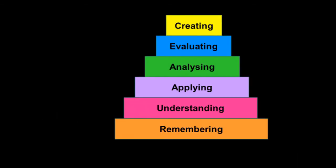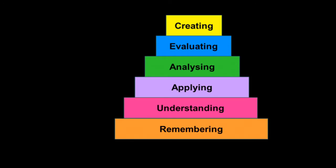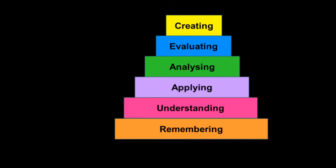Bloom's main theory was that there is an order to how we learn. We start with this foundational aspect of remembering, and then we start to be able to understand — we take those facts that we remember and can start to add complexity to them. From there, we're able to apply that knowledge from remembering and understanding so we can start using it in useful ways. In adult education we jump straight to that application phase as fast as possible, because you are learning because you are going to be using it in a job.